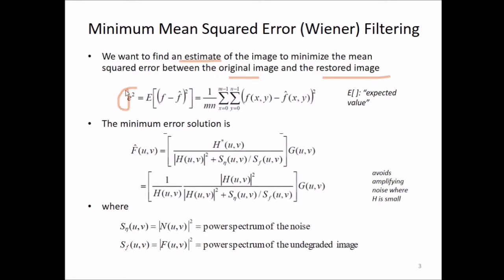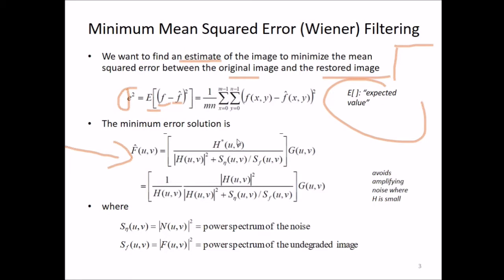The minimum mean square error is the expectation of (f minus f̂) squared, given by (1/MN) times the summation row-wise and column-wise of [f(x,y) minus f̂(x,y)] squared. This is the Wiener filter: F̂(u,v) is given by [H*(u,v) / |H(u,v)|²] times [Sη(u,v) / Sf(u,v)] multiplied by G(u,v), where H* is the conjugate of H, Sη is the power spectrum of noise, and Sf is the power spectrum of the undegraded image.